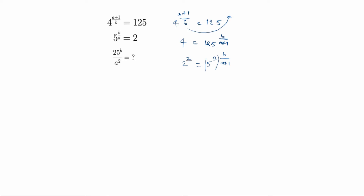Now, 4 we write as 2 squared, and 125 is 5 cubed, raised to the power b by a plus 1. Since 1 is in the denominator it goes upside and 2 comes downside. So we get 2 power 2 equal to 5 cube power b by a plus 1 times 1 by 2. This simplifies to 2 equals 5 to the power 3b by 2a plus 1.